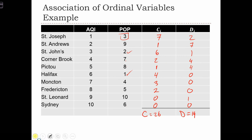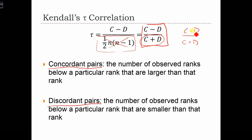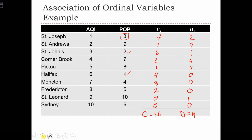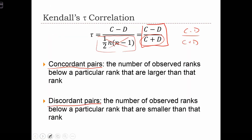So now let's go back to our formula. We have C minus D over C plus D. So C is 26 and D is 19. So we have tau equals 26 minus 19 over 26 plus 19, which is just 7 over 45, which equals 0.2, 1 fifth.